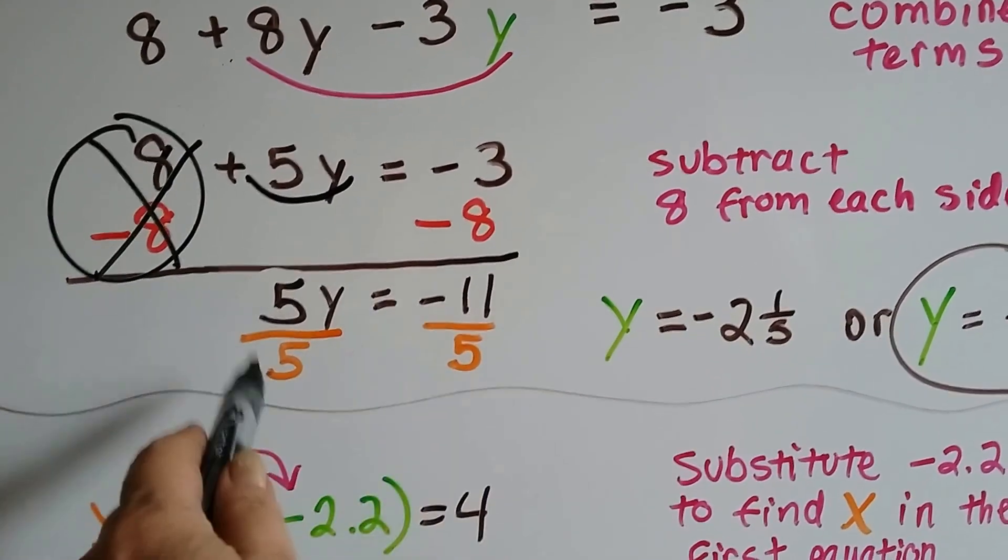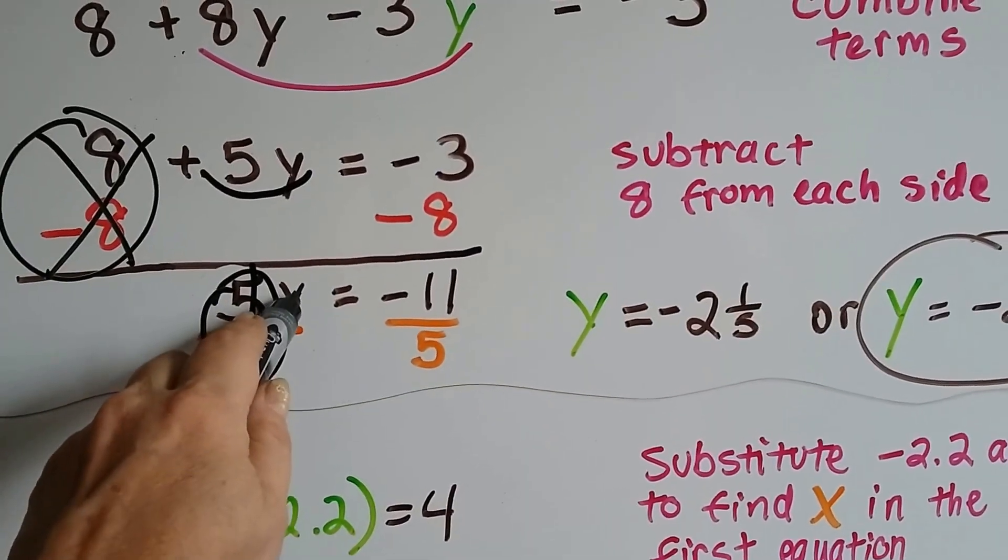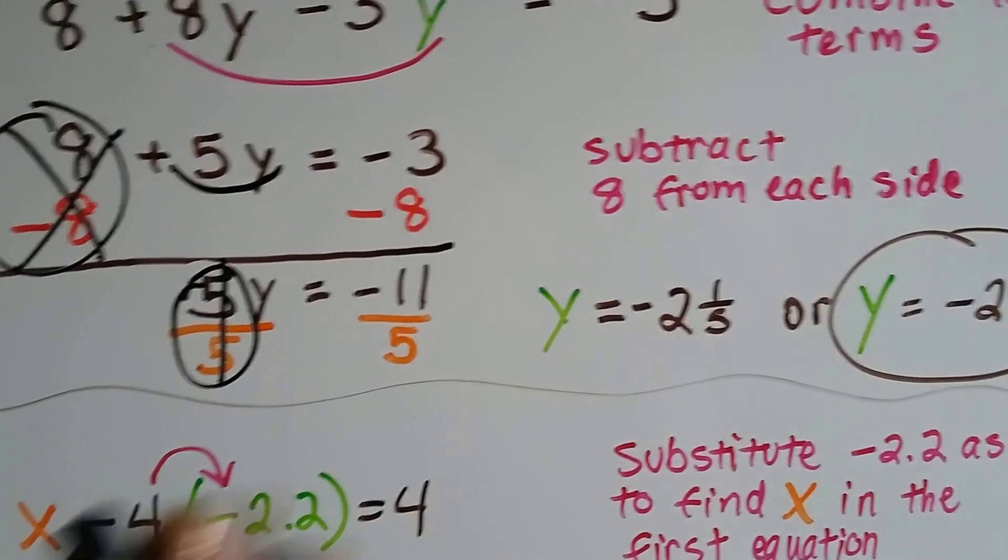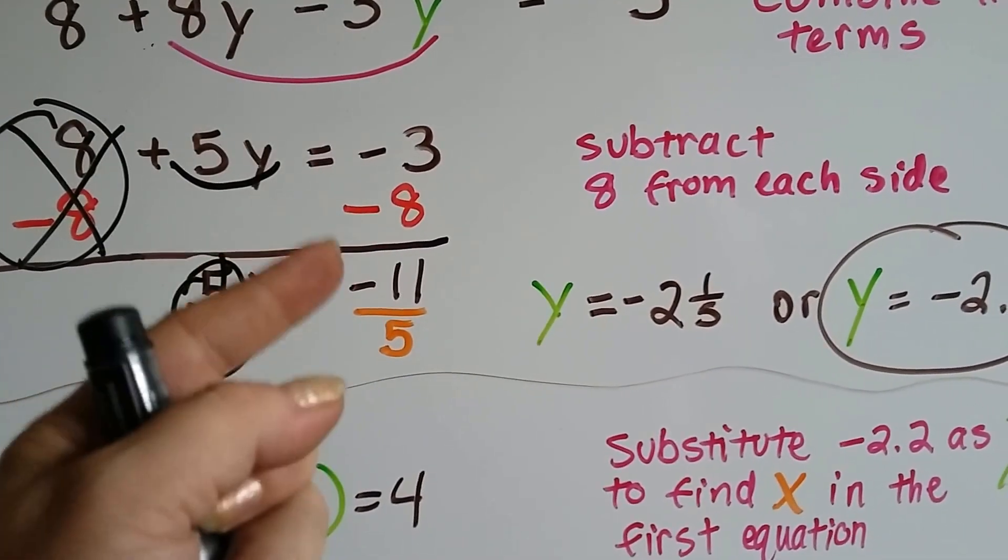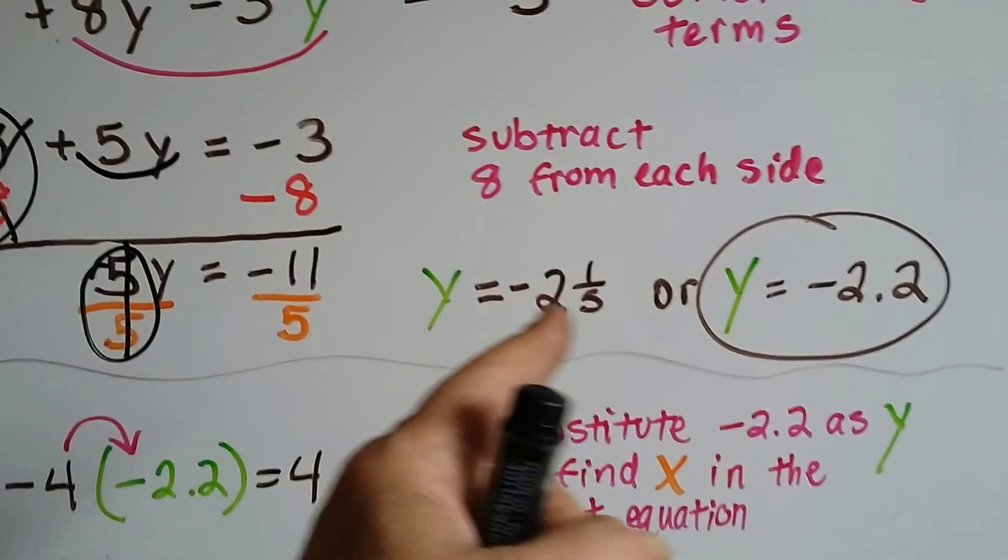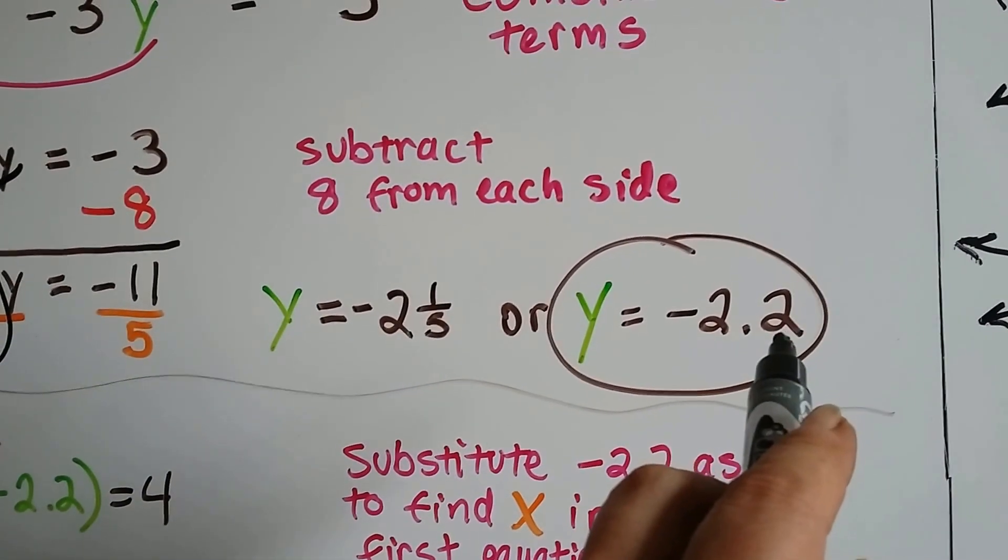5y equals negative 11. And we can divide both sides by this 5 to get y by itself. How many times does 5 go into an 11? 2 times, that's a 10. And then there's a 1 left over, that's 1 fifth. And it's a negative because we have a negative sign there. So it's negative 2 and 1 fifth. Or we can write it as a decimal because 0.2 is a fifth. So y equals negative 2.2.